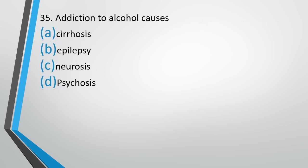Question number 35. Addiction to alcohol causes: cirrhosis, epilepsy, neurosis, or psychosis. The correct answer is option A — cirrhosis. Cirrhosis is a liver disease, and it is often said that the liver is the organ most affected by consuming alcohol.